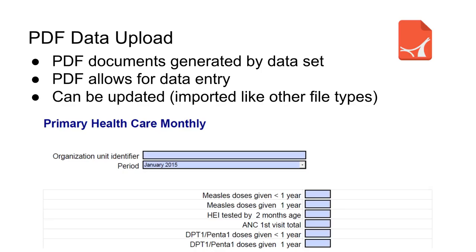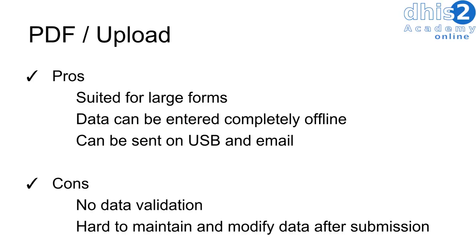PDF data upload is another mechanism to get data into DHIS2. You can generate a PDF document by dataset, which allows you to enter data completely offline. The data can then be sent via USB or email. There are some cons, however — no data validation can be done through PDF forms, and it's hard to maintain or modify the data after submission. Either you will have to send a new version of the PDF file, or inform a user with online access to change the data online.